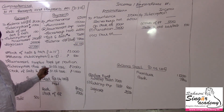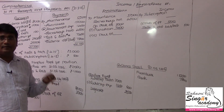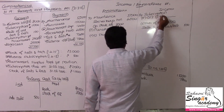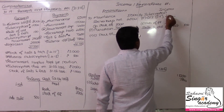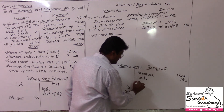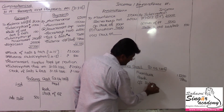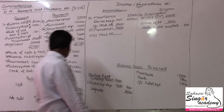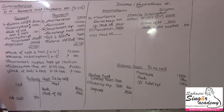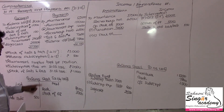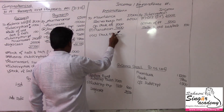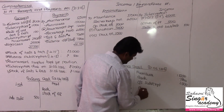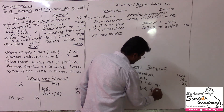Subscription due for 31-3-2016: outstanding of the current year, value being 2,000 rupees — this is an asset. Outstanding subscription value 2,000 rupees posted to the asset side. Closing stock of balls and bats for the year end — 1,000 rupees — posted to the asset side of the balance sheet.